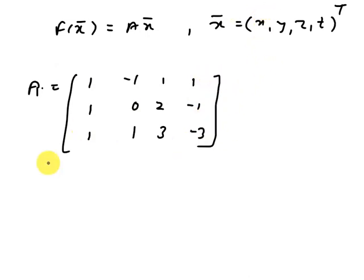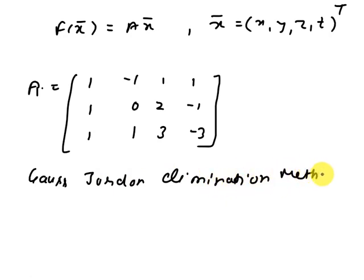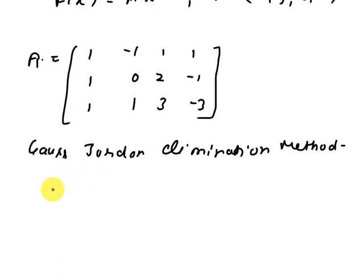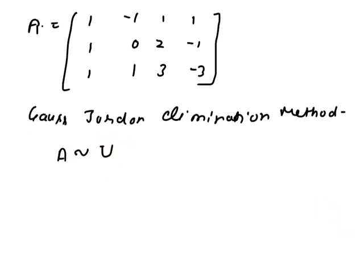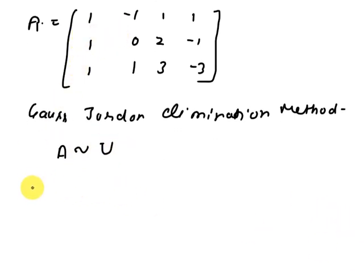So now by using Gauss-Jordan elimination method, we reduce this matrix A in a row echelon form. So that means A is equivalent to U, where U is a reduced echelon form. So now apply operation here.